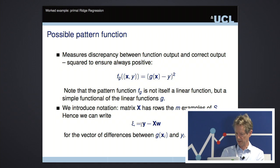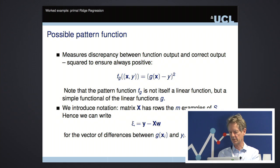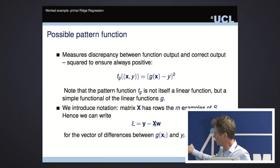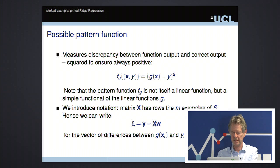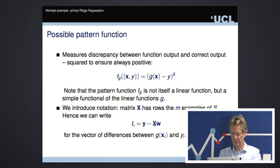We create a vector psi, which is the difference between the output vector over the examples — an m-dimensional vector — and this is the target, while these are the outputs of the function on the inputs. The inputs are the rows of x, so the first row is the first input, second row the second input, and so on. When we multiply that matrix by the weight vector w, we get the column vector of outputs generated by the linear function. We subtract that from the target and have this discrepancy vector psi.